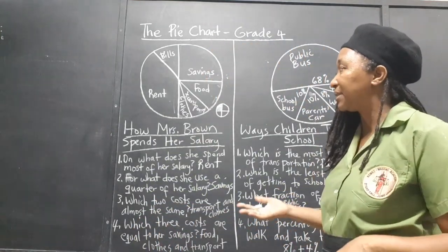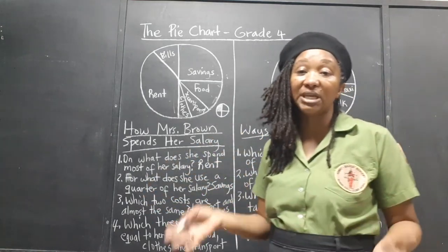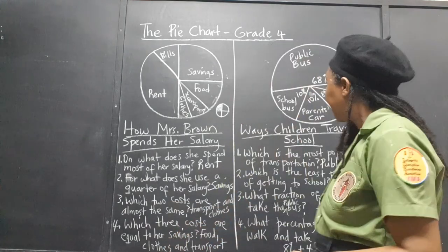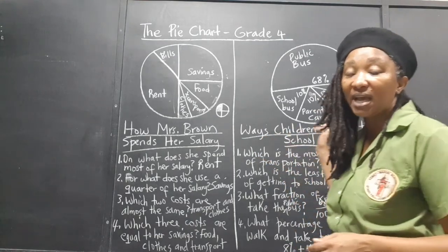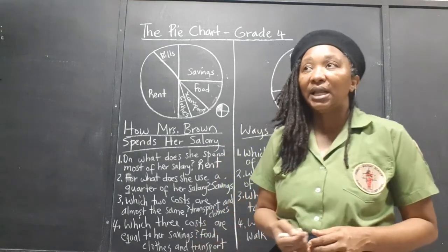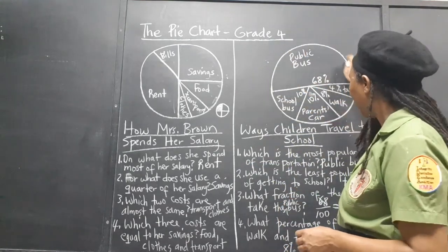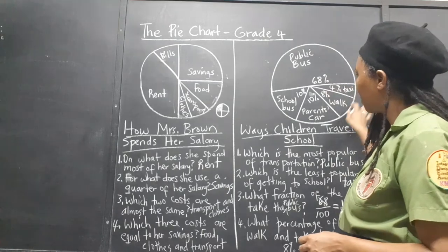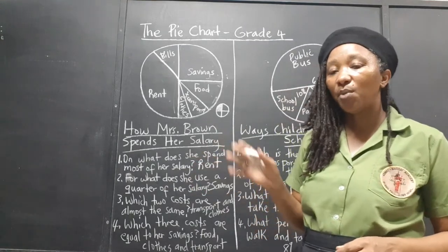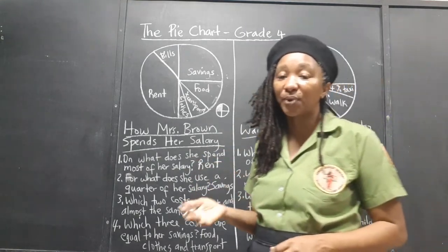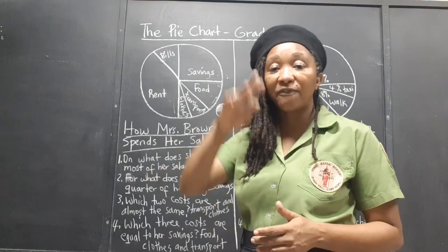Sometimes the pie chart amounts can be given in percentages, sometimes even in degrees. If it's expressed in percentages and you are asked to express those as fractions, just remember to put the amount over 100. If they gave you the amounts in degrees, we are dealing with a full circle — remember there are 360 degrees in a circle — so put that degree amount over the full 360.